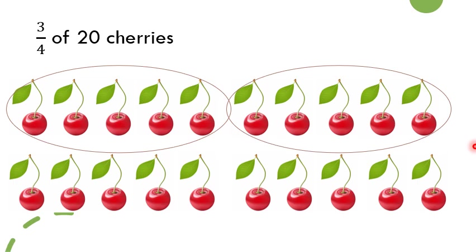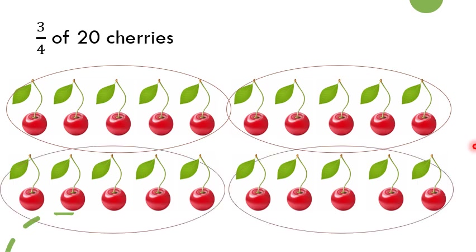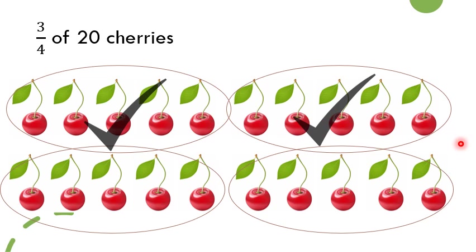We form group 1, group 2, group 3, and group 4. Now if you observe, each group has 5 equal cherries. Then depending upon the numerator, we will be selecting 3 groups from all these 4 groups because our numerator is 3. So first, second, and third — 3 equal groups we have taken.